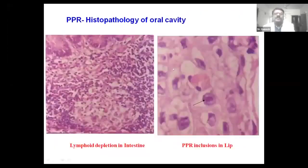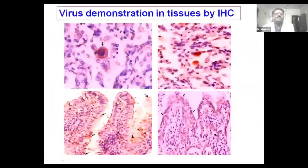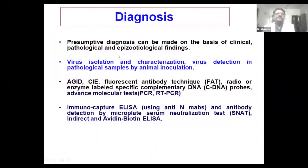In the lymph nodes, there is severe lymphoid depletion and necrosis in the mesenteric lymph nodes. This severe lymphocytic depletion is a characteristic lesion of PPR. You can also find inclusions in the lips, and lymphoid depletion in the intestine. Immunohistochemistry can be used to identify the PPR antigen in various tissues.